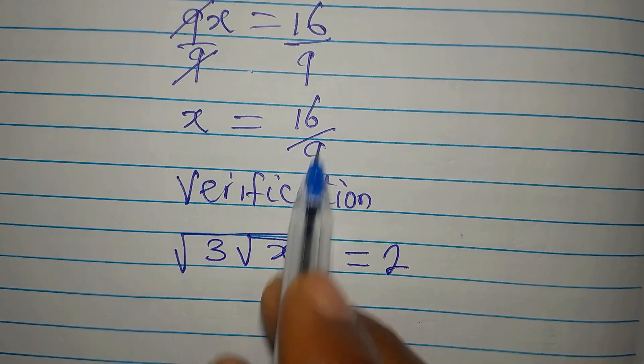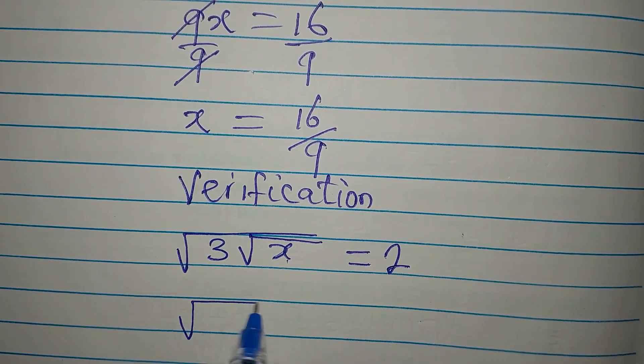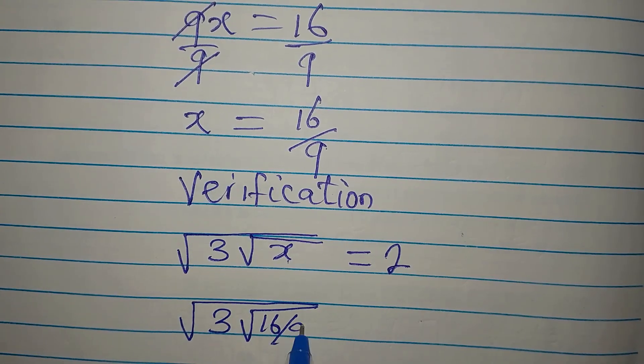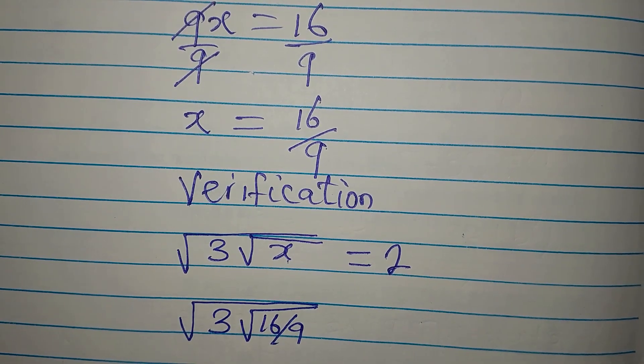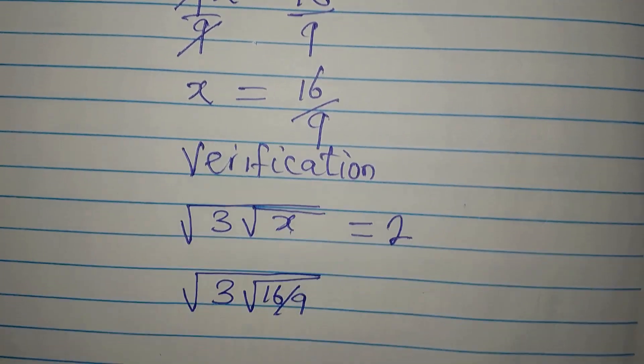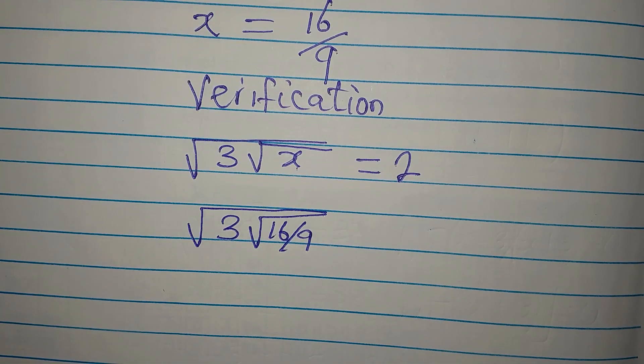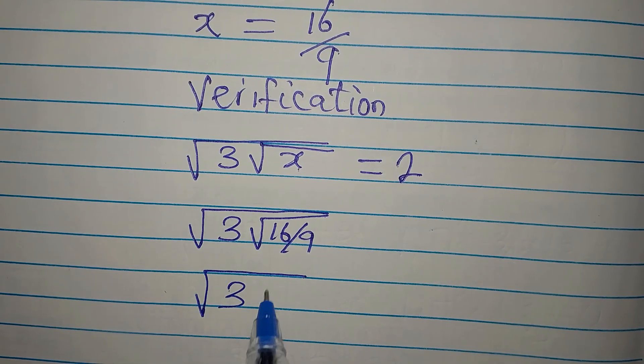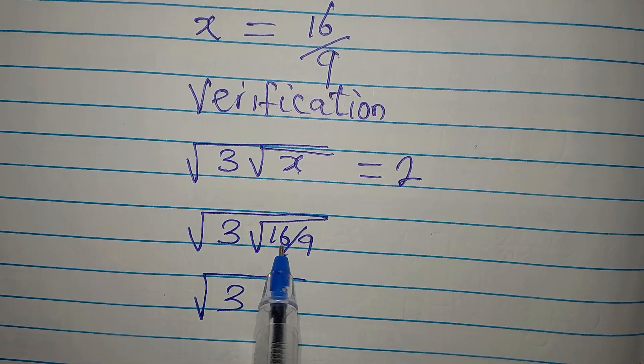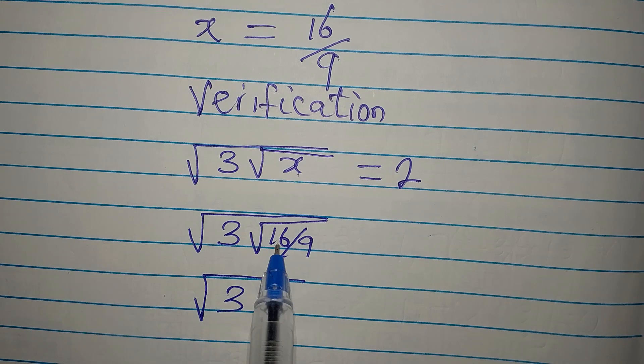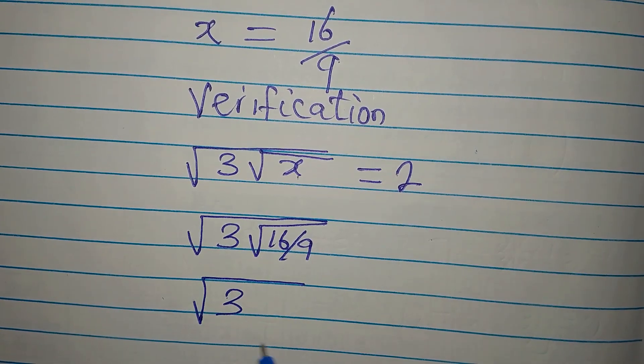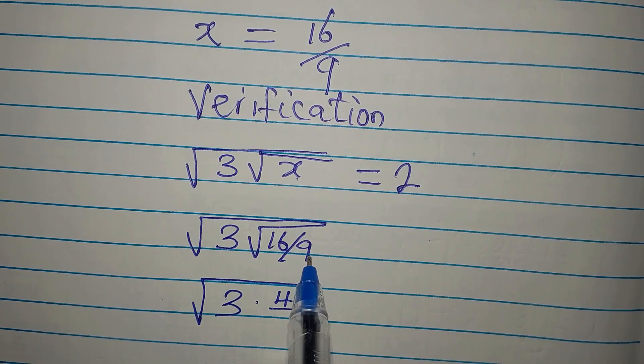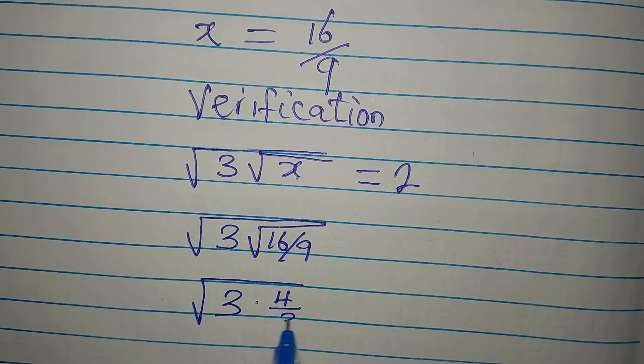Now, I'm going to put this in place of x. So we have square root of 3, now square root of 16 divided by 9. So we're going to have square root of 3, then square root of 16 over 9. We can decide to find the square root of 16 and get 4 over the square root of 9 and then we get 3.